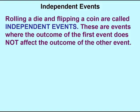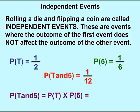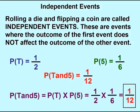Rolling a die and flipping a coin are called independent events. The reason is that the outcome of one event does not affect the outcome of the other event — it doesn't matter what we get on the coin, it doesn't determine what number shows up on the die. With independent events, we can take the probability of each event separately. The probability of flipping a coin and getting tails is one out of two; the probability of rolling a five on a die is one out of six. To calculate the probability of two independent events happening at the same time, we simply multiply: one half times one sixth gives us one twelfth.